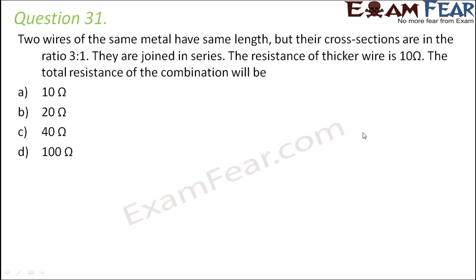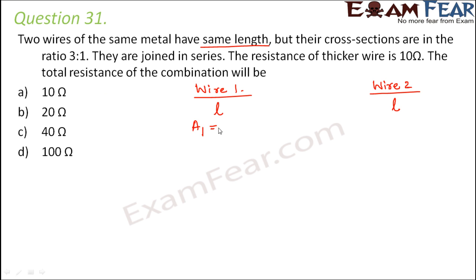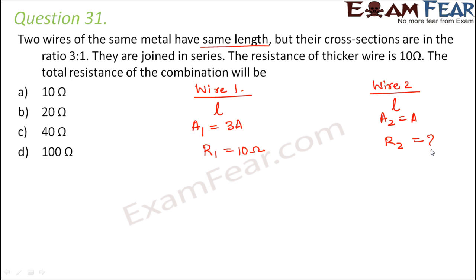Question number 31. Two wires of the same metal have the same length, but their cross sections are in the ratio 3 is to 1. They are joined in series. The resistance of the thicker wire is 10 ohms. The total resistance of the combination is to be found. For wire 1, the length is L, and for wire 2, the length is also L. Their cross sectional areas are in the ratio 3 to 1, so if wire 1 has cross sectional area 3A, then wire 2 has area A. The thicker wire has greater cross sectional area, so resistance of the thicker wire is 10 ohms. We need to find the resistance of the thinner wire.